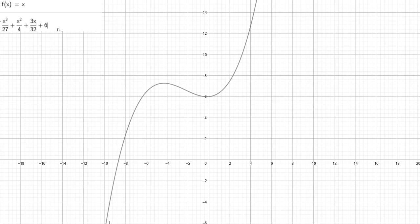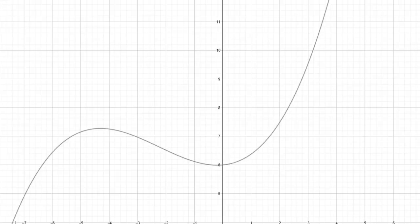So let me just write one equation: x³/27 + x²/4 + 3x/32 + 6. Now this is the curve that I am going to use to represent the initial path of the roller coaster.